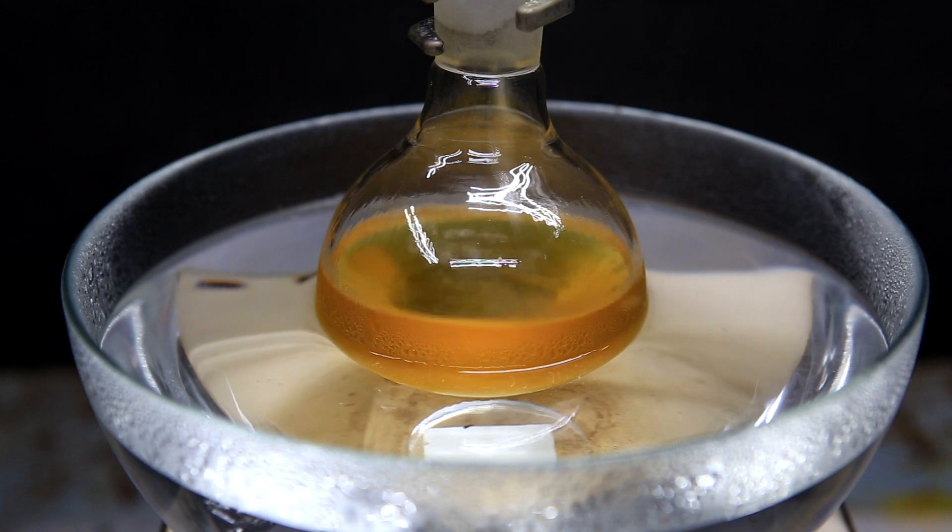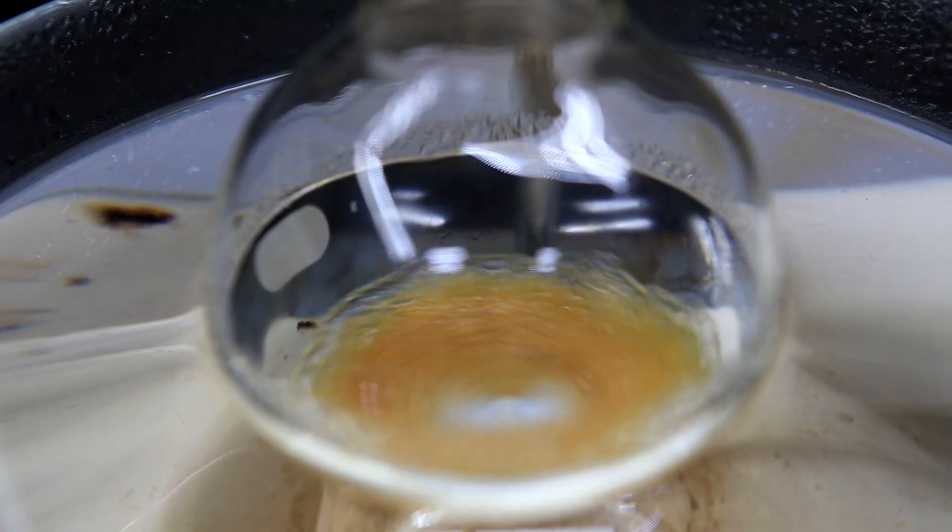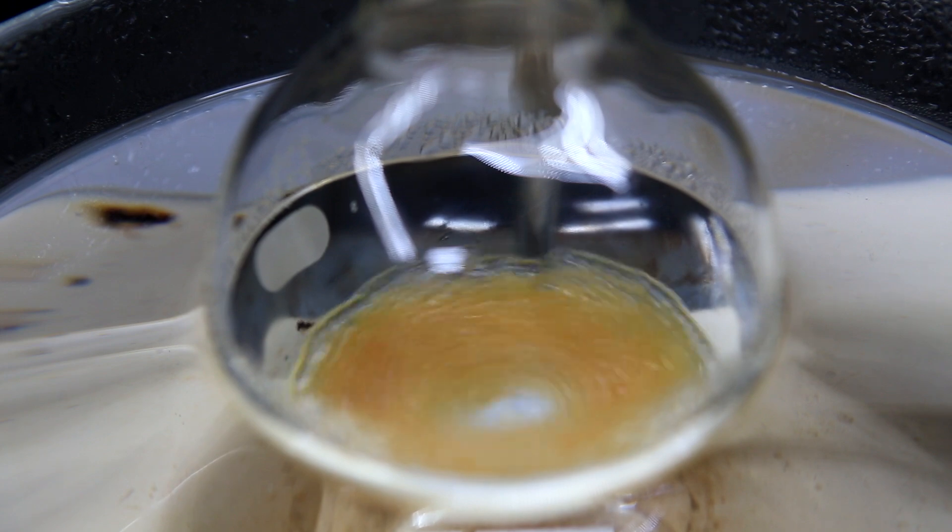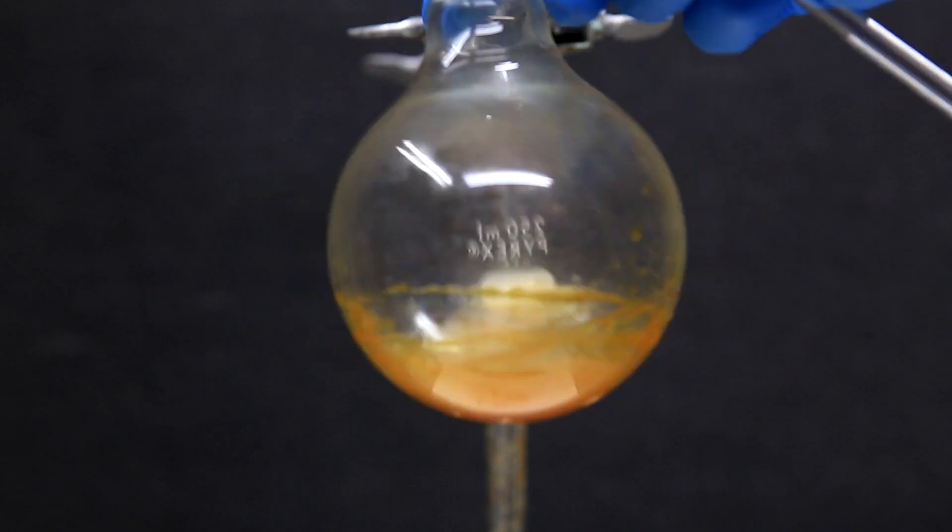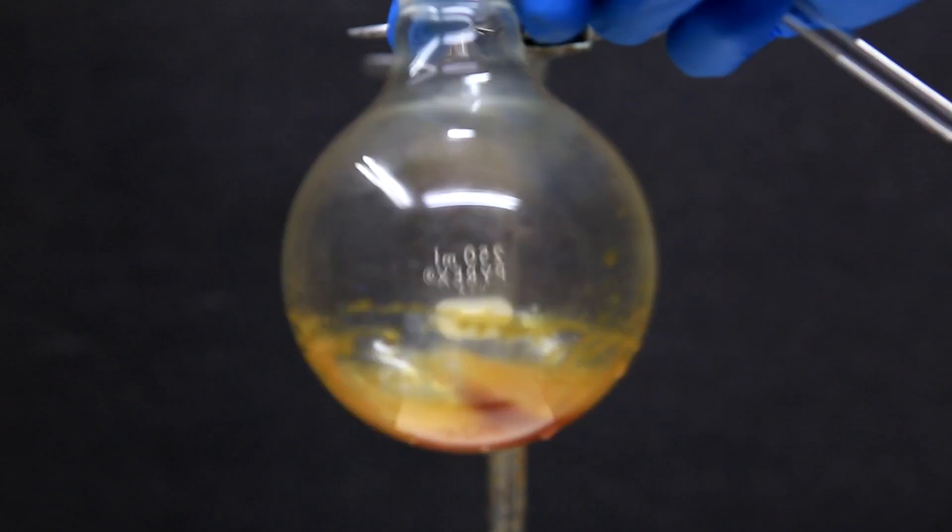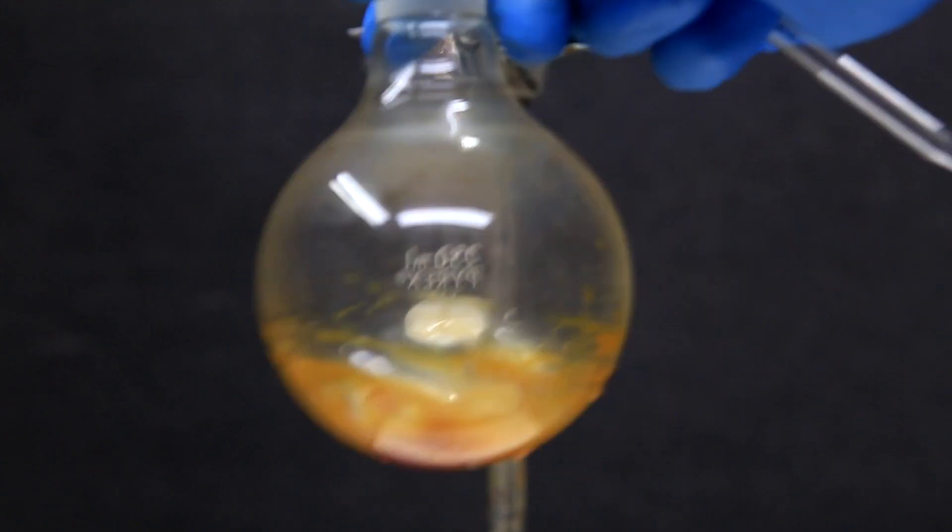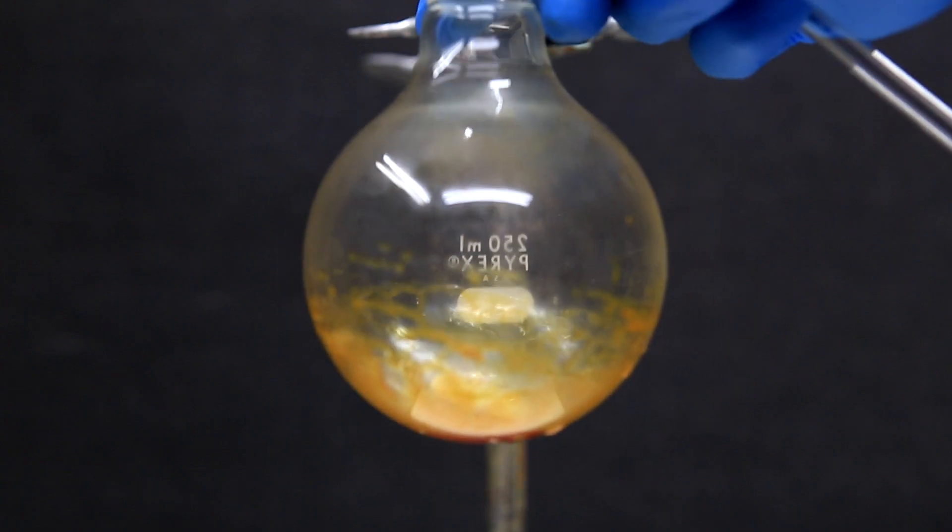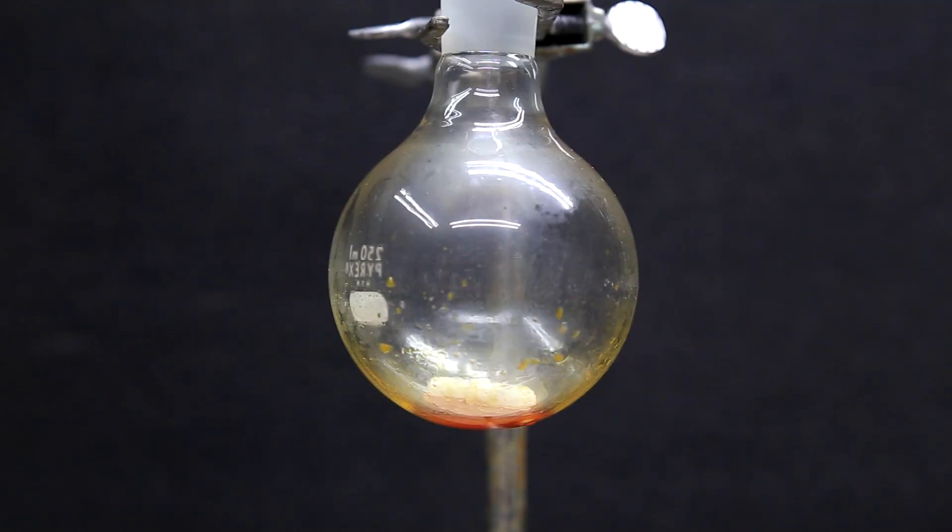I then set up a distillation to isolate our beautiful freebase. After like 30 minutes, we're left with very little DCM and we're very close to getting our freebase. Something about 10 minutes later, the distillation is done and you can see a nice red oil at the bottom. When I shake the flask around, the stuff sticks to the side and we can see that we indeed do have an oil.